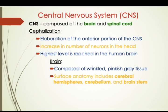What is the human brain made up of? It is nothing but wrinkled, pinkish, grey tissue. The surface anatomy includes the cerebral hemispheres, the cerebellum, and the brain stem.